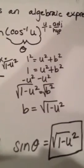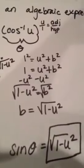You get b equals square root of 1 minus u squared. So you can find the opposite value: square root of 1 minus u squared.